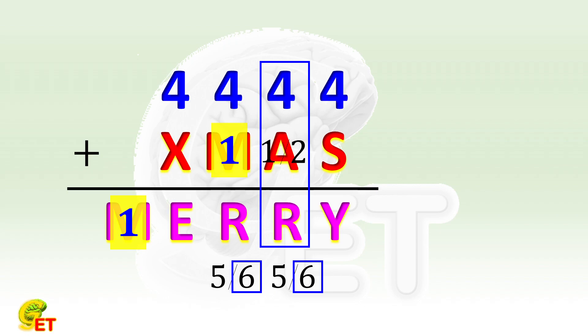No need to mention that M is already equal to 1. No matter whether A is equal to 1 or 2, there is no carry in this place. Then in the place before it, 4 plus 1 can only be 5 but not 6.